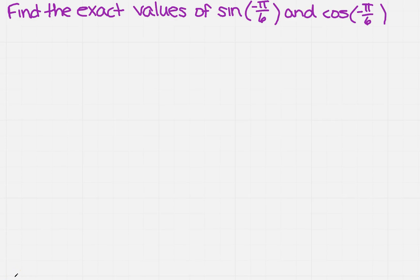We want to find the exact values of sine of negative pi over 6 and cosine of negative pi over 6. If you're not real comfortable with radians yet, the very first thing I always suggest is you convert it to degrees.